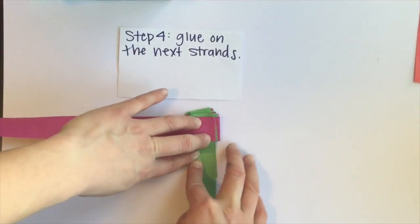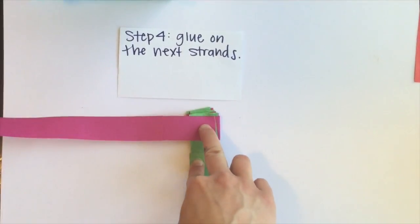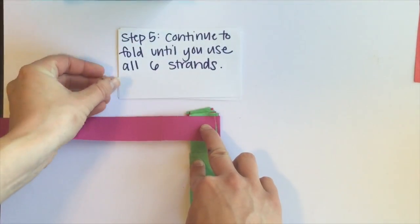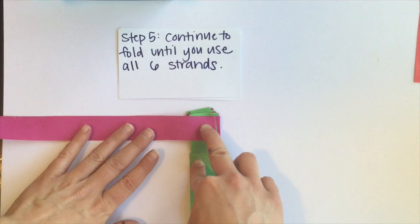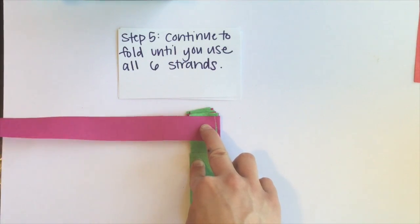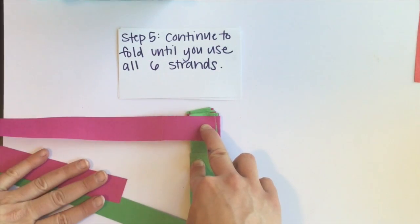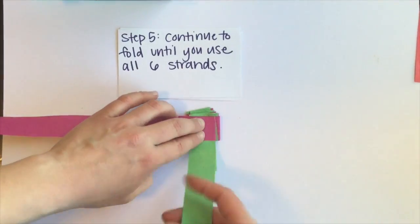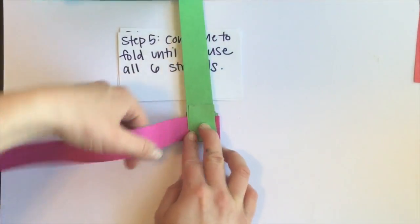And then for step five I'm going to continue to fold it and glue on the extra strands until they're all gone. So I have two more left after this to get all six strands folded. So I'm going to continue to fold.